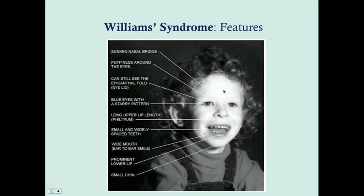Looking at photos of patients with Williams syndrome, you can see the classic facial features: a sunken nasal bridge — which allows you to see more of the nares — puffiness around the eyes, blue eyes with a stellate pattern, a long upper lip, a wide ear-to-ear smile, widely spaced teeth, a wide mouth, prominent lower lip, and a small chin.